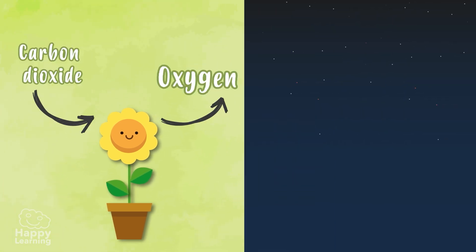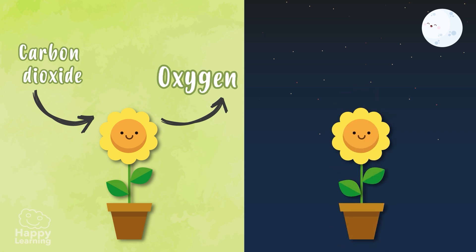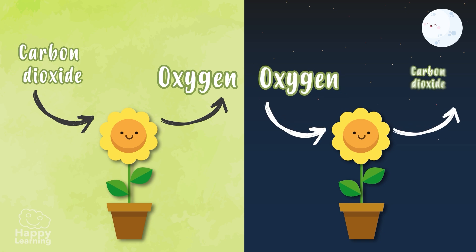When humans breathe, we turn oxygen into carbon dioxide — quite the opposite of when plants perform photosynthesis. A curious fact: at night, because plants don't have sunlight to photosynthesize, they breathe like humans do — they take in oxygen and release carbon dioxide.